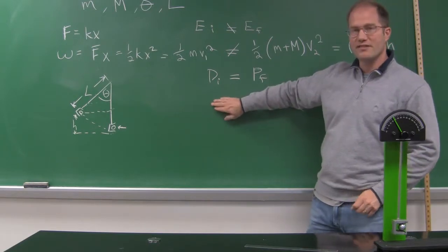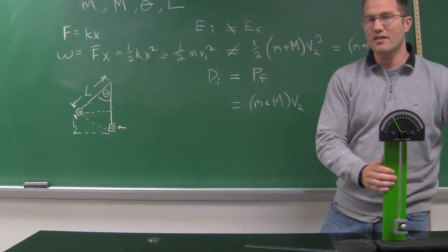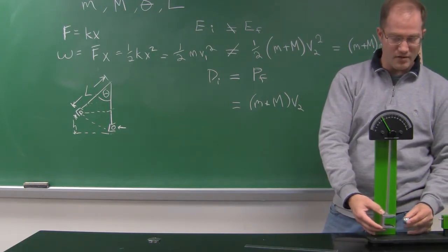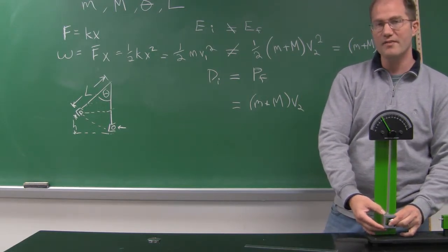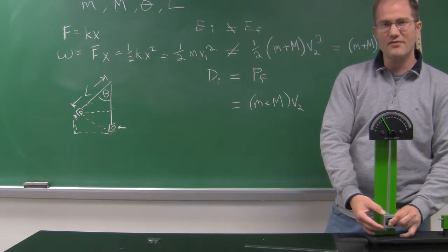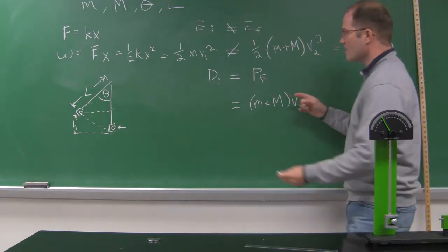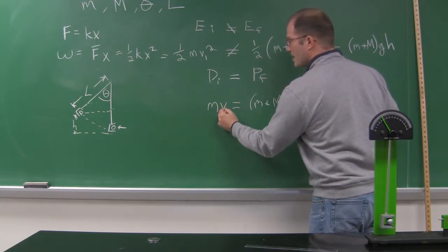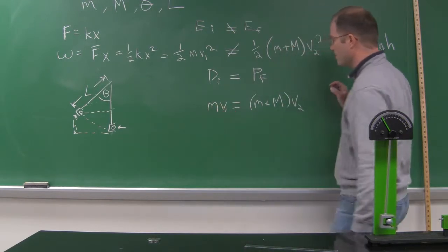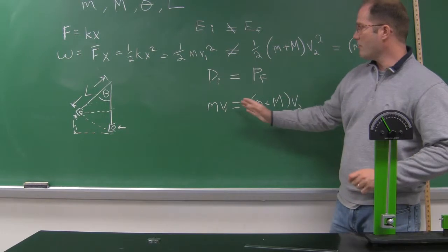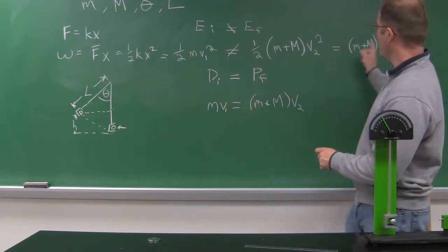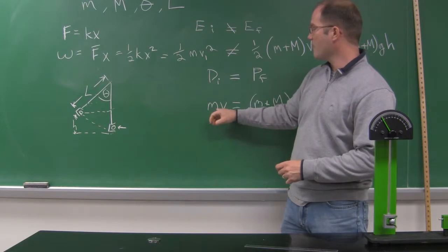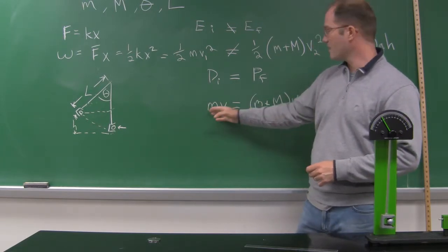Before the collision, the only thing that was moving was the ball — the cup was stationary. The ball was going with mass little m and velocity V₁. So before the collision, the total momentum of this system was little m times V₁. And so we can go from the pendulum height, to V₂, to final momentum, bridge the collision, and now we know what V₁ is with a little bit of algebra. If big M and V₂ are known, we can solve for V₁.